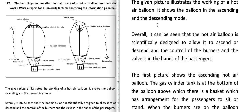Now we'll write the overview, which starts with the word 'overall' after the introduction — this can be given at the end also, but I like to put it here. Overall, it can be seen that the hot air balloon is scientifically designed to allow it to ascend or descend, and the control of the burners and the valve is in the hands of the passengers. You can see the passenger is holding this valve cord, and the burners can be switched on and off by the passengers.